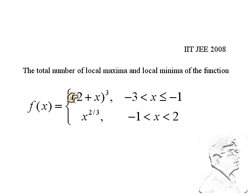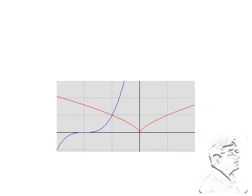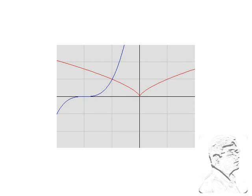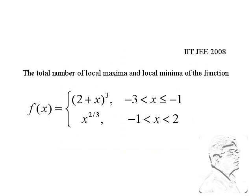One should go for the increasing/decreasing type of method. If you differentiate (2 + x)³ you get a square, which is a positive number — it indicates that this function is an increasing function, and minus 2 should be a point of inflection. Looking at the graph, here is the point minus 2, the point of inflection. For the other function, its first derivative has x to the power minus 1/3.